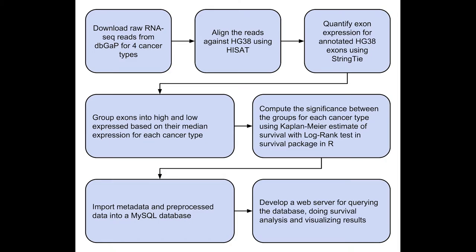We employed the survival package in R to estimate the contribution of a given exon to survival of patients in a cancer type based on their expression, by applying the Kaplan-Meier estimate of survival with log-rank test and Cox proportional regression model to measure the significance of difference between the patient groups categorized by their expression value.